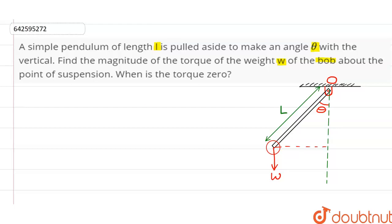So torque is given as force into perpendicular distance R. Here the force is the weight of the bob W into the perpendicular distance is this one.